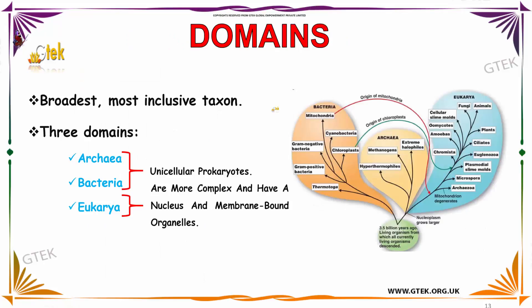Now we are going to see about domains. Domain is the broadest and most inclusive taxon. It has three domains: the first one is Archaea, bacteria, and Eucarya. Archaea and bacteria are unicellular prokaryotes. Eucarya has a nucleus and membrane-bound organelles, making it a more complex one.